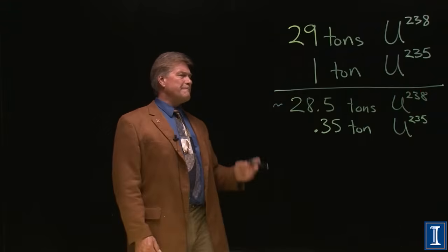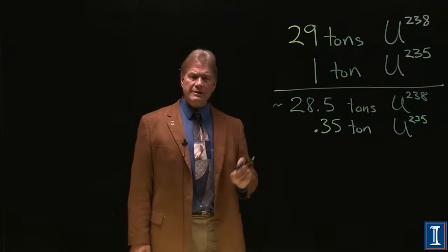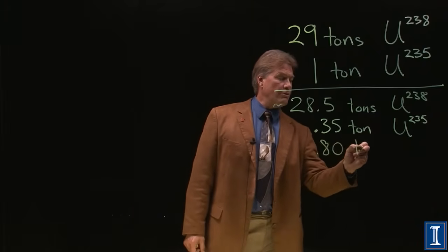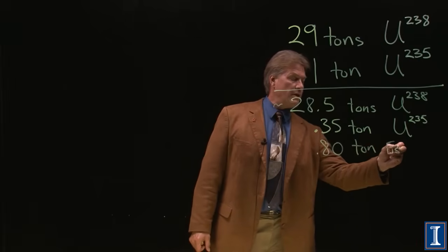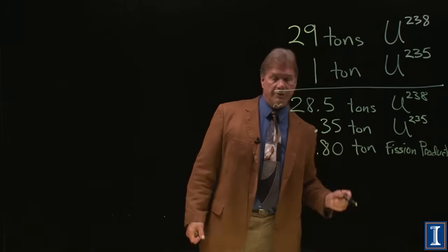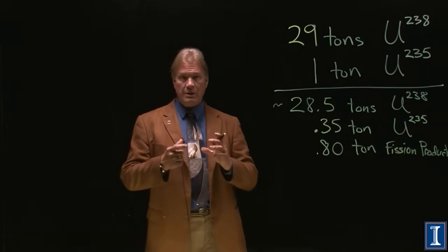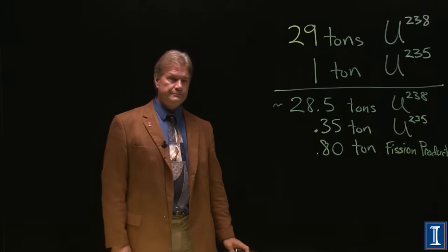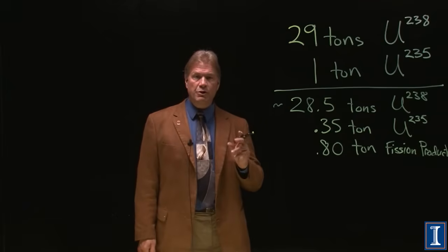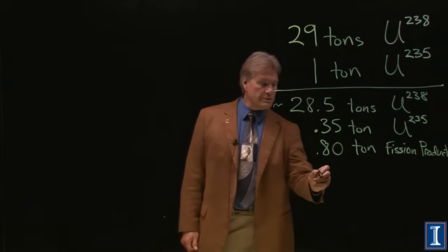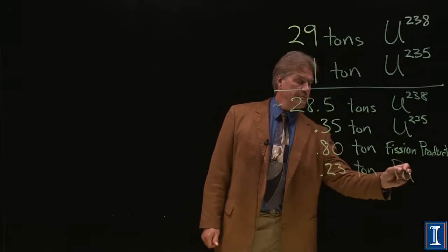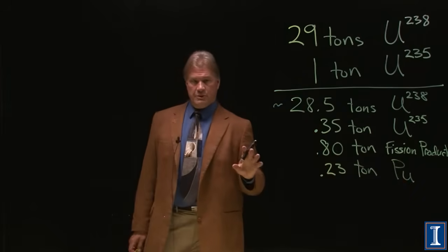You add that up and we're not at 30 yet. What about the things the uranium split into? That's the biggest constituent: 0.80 tons of fission products — not all one element, a whole mishmash of different, mostly radioactive materials in the mid-range of the periodic table. There are also things heavier than uranium — transuranics — and the most prevalent one is plutonium: 0.23 tons of plutonium.